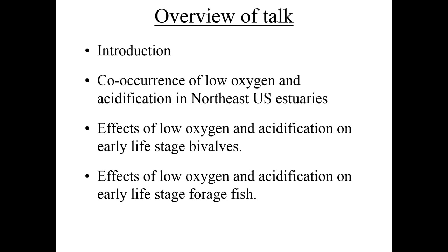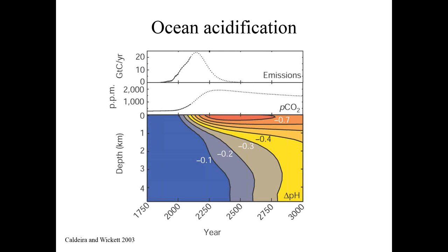Then I'm going to talk about how those conditions may affect early life stages of both bivalves and early life stages of what we call forage fish. To hop right into it, I'm going to start with this figure on ocean acidification from Caldera and Wicket, more than a decade ago. I like the figure because it gives you the general sense of how we expect ocean acidification to proceed — that mankind will combust its fossil fuels, our atmosphere will become enriched in carbon dioxide, and if that CO2 comes to equilibrium with our surface ocean, the pH of the surface ocean with time will decline. This is one of the first papers to recognize that our surface oceans had already declined in pH by 0.1 units.